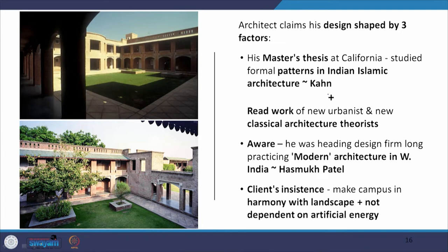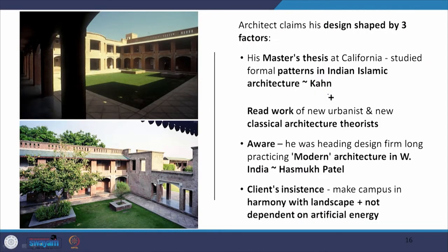The architect claims his design was shaped by three factors: first, his master's thesis in California where he studied formal patterns in Indian Islamic architecture — something connected to Louis Kahn, who was also impressed by Islamic patterns and geometric shapes. Second, he read the work of new urbanists and new classical architecture theorists, again in connection to Louis Kahn, who was classically minded throughout his architectural life. Third, Bimal Patel was aware he was heading a very well-established design firm shaped by the works of his father Hasmukh C. Patel.